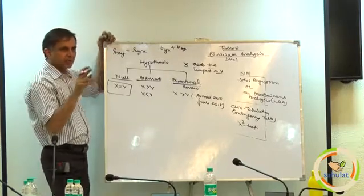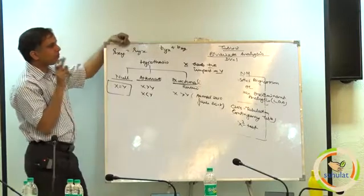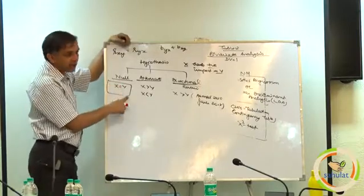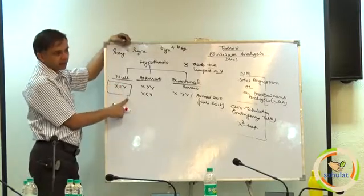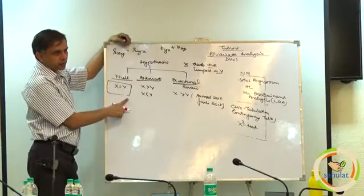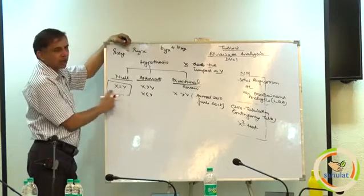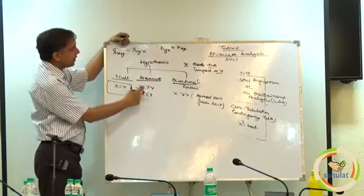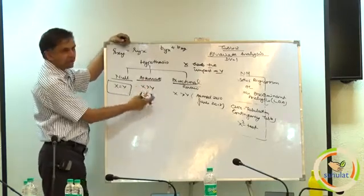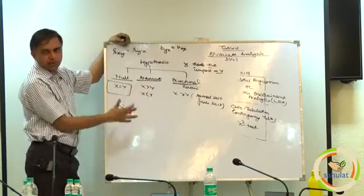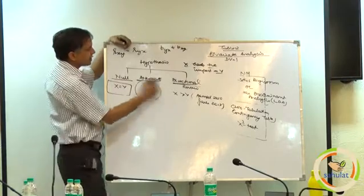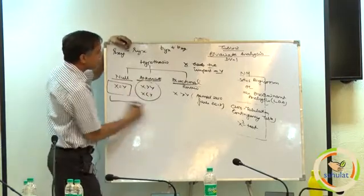That means the moment you talk about regression, we talk about the dependent and independent variable. Simply saying there is no relation, there may be a relation — there are n number of possibilities. So alternate we are not much concerned with; these are only for the books.